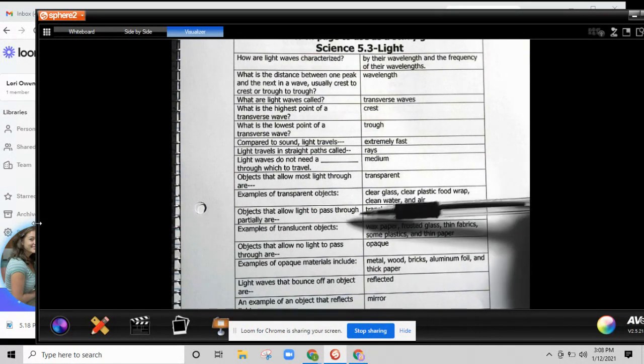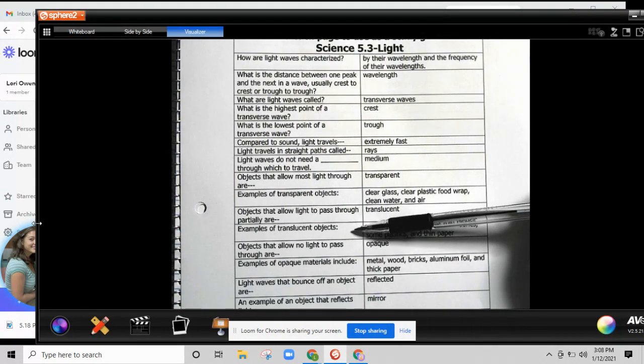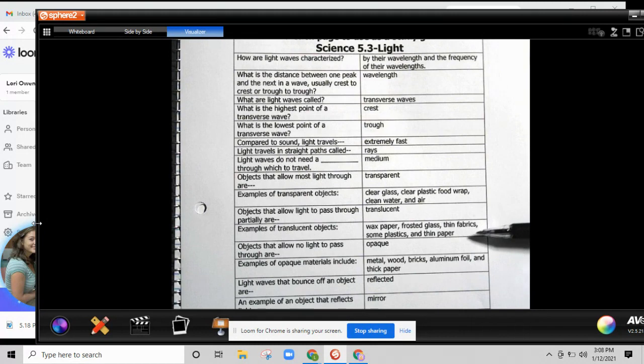Objects that allow light to pass through partially are translucent. Examples of translucent objects: wax paper, frosted glass, thin fabrics, some plastics, and thin paper.